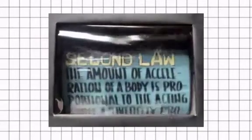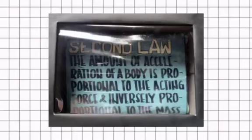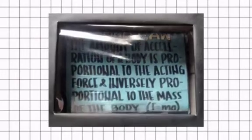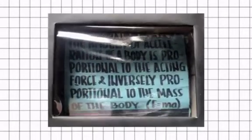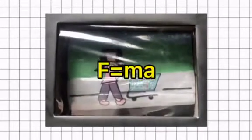The second law states that the amount of acceleration of the body is proportional to the acting force and inversely proportional to the mass of the body. In equation form, the second law of motion is stated as force is equal to mass times acceleration.